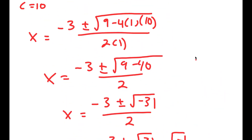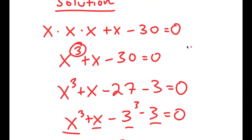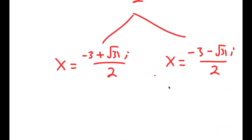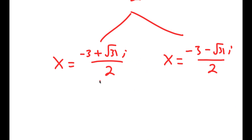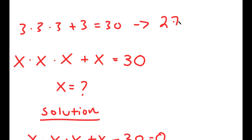Going back, my original equation was x times x times x plus x minus 30 equals 0. These two are complex solutions, so we can't really check them, and they are not real solutions. But what we can check is x equals 3. If we plug in 3, we get 3 times 3 times 3 plus 3 is equal to 30, which turns into 27 plus 3 is equal to 30, and I get 30 is equal to 30.